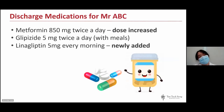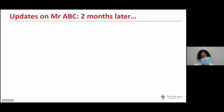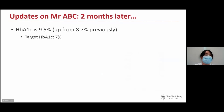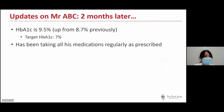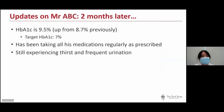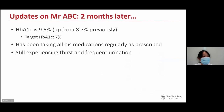Mr. ABC's foot wound improved and he was discharged with adjusted diabetes medications — metformin was increased and linagliptin (a DPP-4 inhibitor) was added. However, two months later, his HbA1c worsened to 9.5%, well above his target of 7%. Although he had been taking all medications regularly as prescribed, he was not controlling his diet. He continued to experience thirst and frequent urination — signs of high blood sugar and inadequate diabetes control.